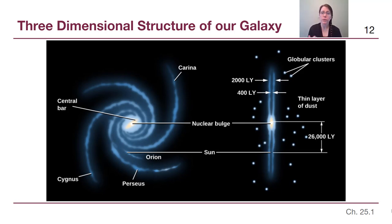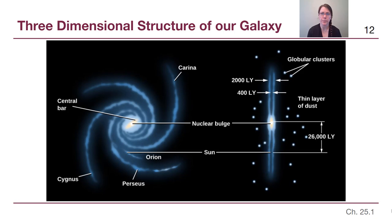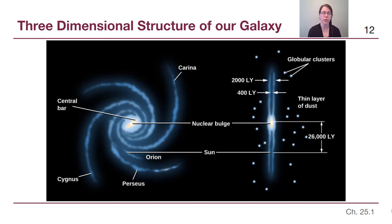Our view is from where the Sun's location is — about 26,000 light-years from the center of the galaxy. We don't need to memorize that number, but about two-thirds out is useful to have in mind: we're closer to the edge of the galaxy than to the center. It has a central bar; we will talk about barred spirals compared to grand design spirals later in our module.